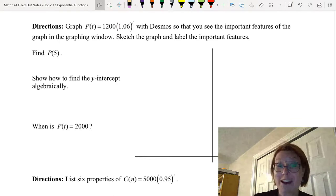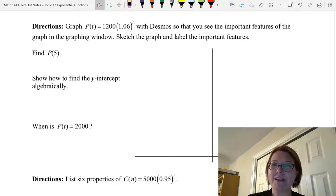Now I'd like you all to try a problem on your own. Let's graph P(t) = 1200(1.06)^t. Graph it with Desmos so that you can see the important features of the graph in the graphing window, which means you're going to have to move the graphing window around a little bit to see what's going on. Then go ahead and sketch that graph below and label those important features. There's a few questions to answer, so give those a try too.